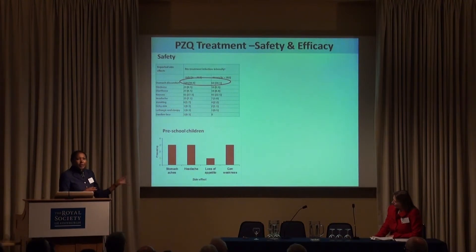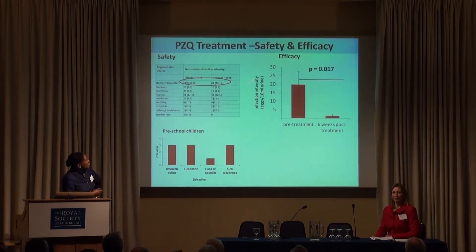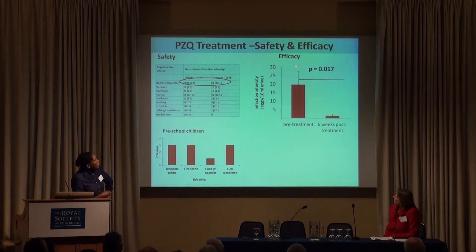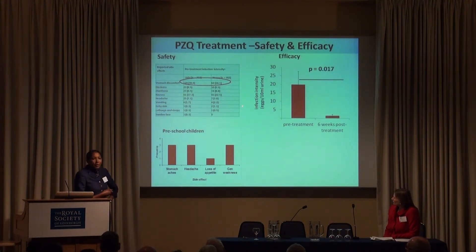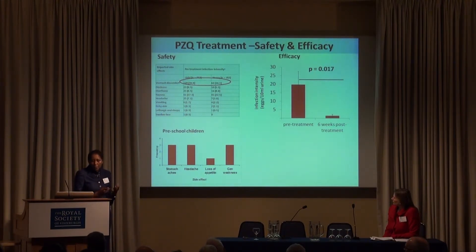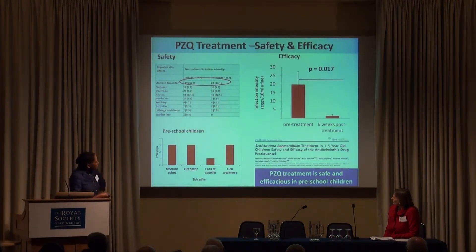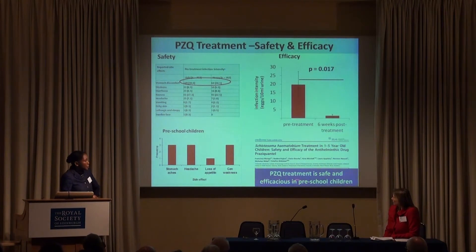We also looked at allergic sensitization and clinical allergy. We looked at the efficacy — Praziquantel is highly efficacious in children aged one to five, with a significant reduction at six weeks post-treatment. The cure rate and reduction in infection intensity in this age group is quite comparable to children aged six years and above, who are the current target for mass drug administration. We published that work and concluded that Praziquantel treatment is safe and efficacious in preschool children.